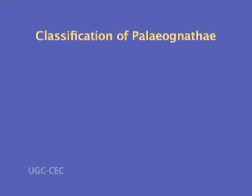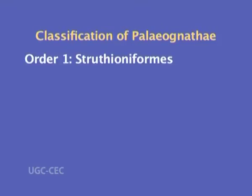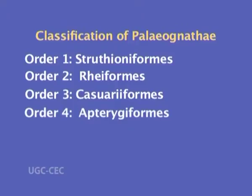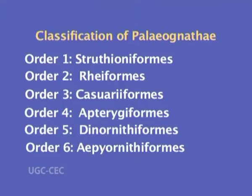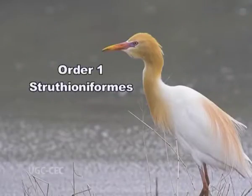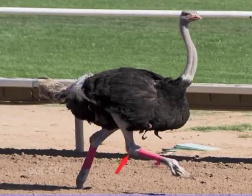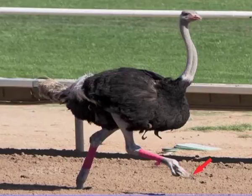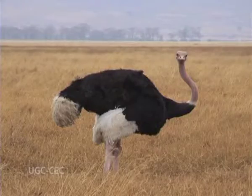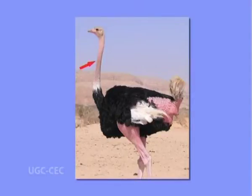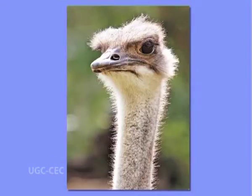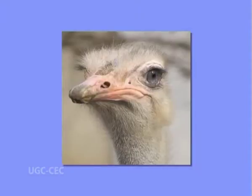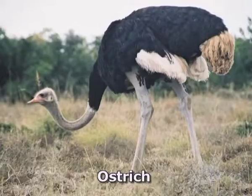Paleognathae is further classified into seven orders: Struthioniformes, Rheiformes, Casuariiformes, Apterygiformes, Dinornithiformes, Aepyornithiformes, and Tinamiformes. Order 1, Struthioniformes — struthio meaning ostrich-like form. Legs are strongly developed, each with two toes (third and fourth only) with stunted nails. They are large flightless terrestrial birds. Head, neck and legs are sparsely feathered and feathers are without aftershaft. Head is comparatively small and neck is very long and flexible. Beak is short and broad. Sternum is without keel. Pubic symphysis is present. No pygostyle. Example: ostrich.